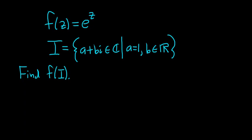In this problem, we have the complex exponential function, f of z equals e to the z. We have this set I, and we're being asked to find the image of I under the function f. So what is f of I?